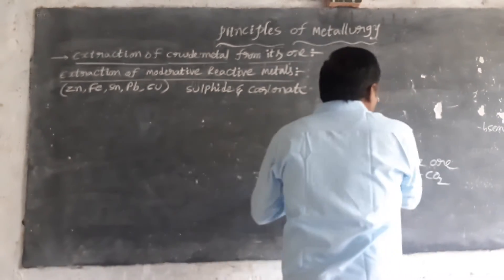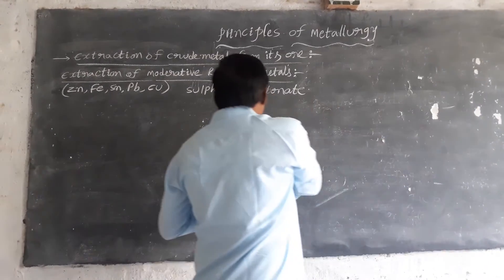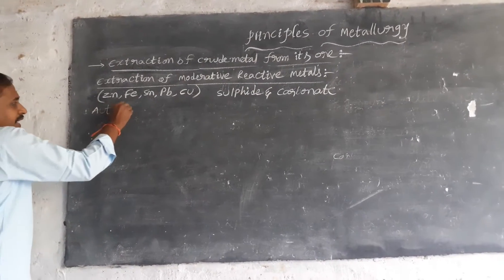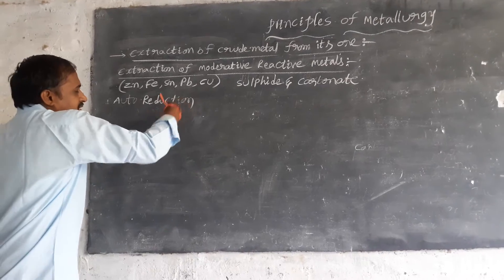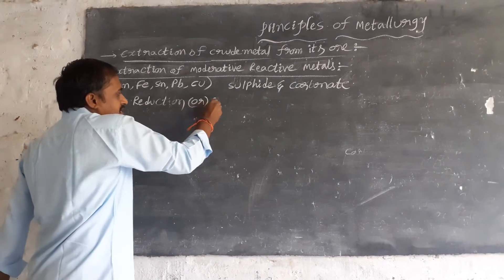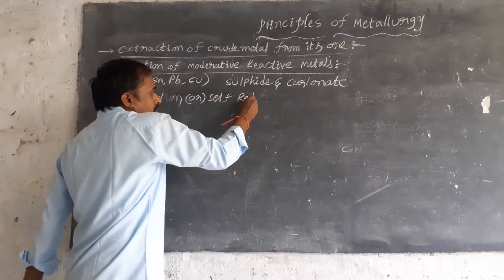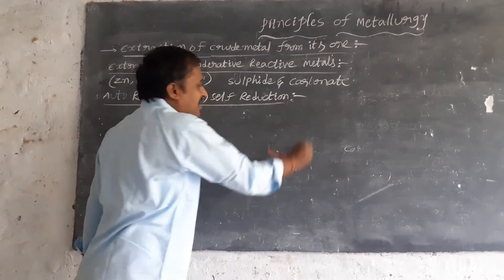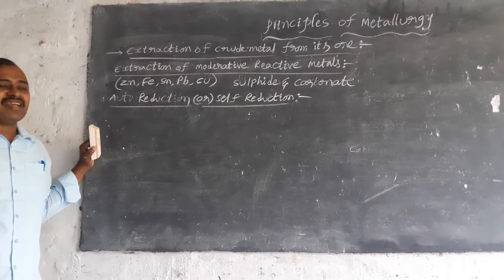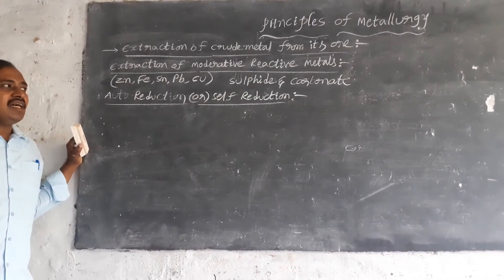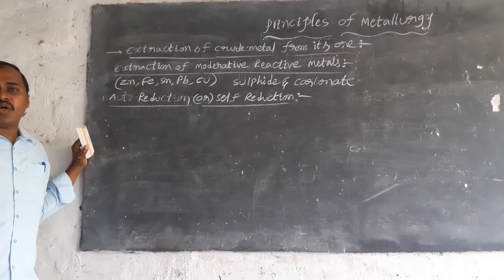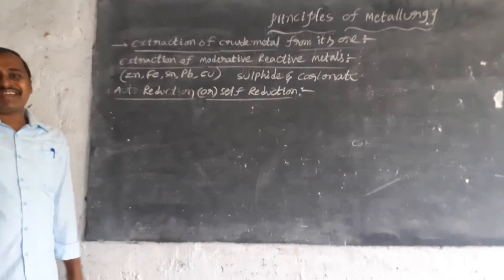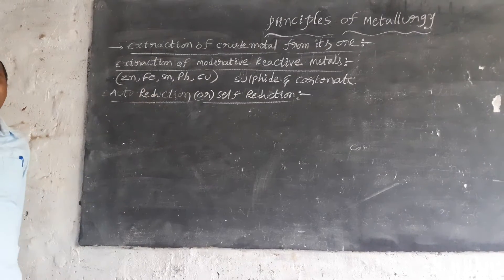Now we can follow auto reduction, also called self reduction. Already we know about oxidation and reduction from previous classes. Oxidation means the adding of oxygen, or removal of hydrogen, or loss of electrons. Reduction means removal of oxygen, or addition of hydrogen, or gain of electrons.